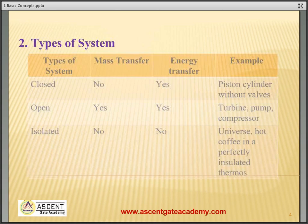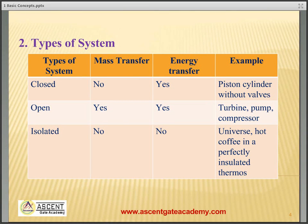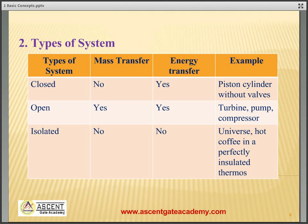Types of system: A closed system is one in which mass transfer does not take place but energy transfer takes place — for example, a piston cylinder arrangement without any valves. An open system is one in which both mass and energy transfer occur — examples include turbines, pumps, and compressors. An isolated system is one in which neither mass transfer nor energy transfer occurs — for example, the universe or a thermos flask is an isolated system.